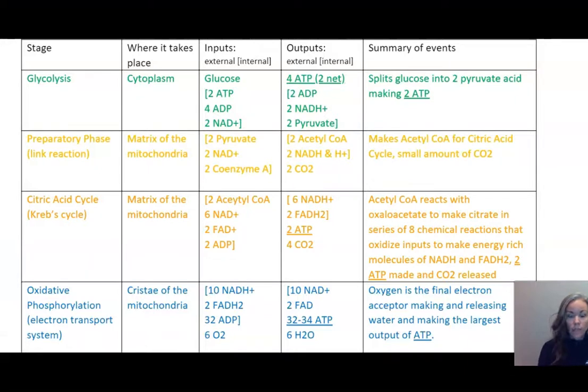To recap, cellular respiration, the entire purpose of cellular respiration is to make ATP. It happens in four stages in eukaryotes. Those are cells that have membrane-bound organelles, which includes a mitochondria. In prokaryotes, it only happens in glycolysis. Glycolysis happens in the cytoplasm. The preparatory phase, citric acid cycle, and oxidative phosphorylation all happen in the mitochondria.